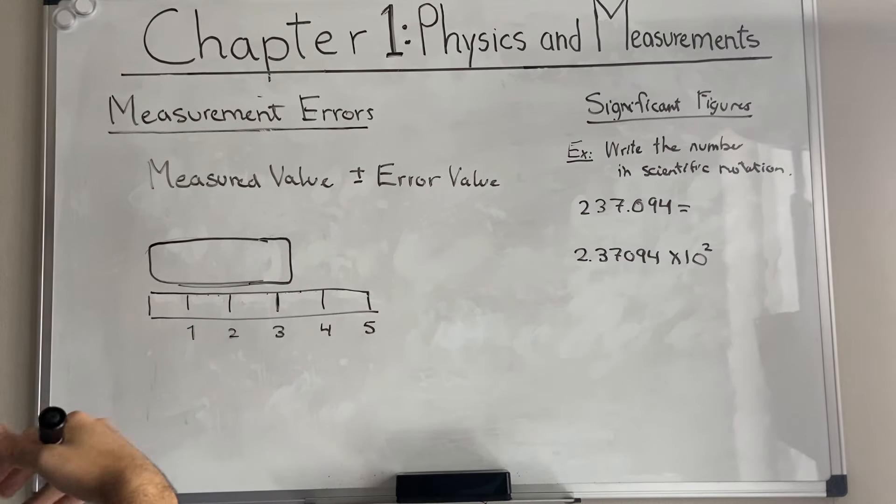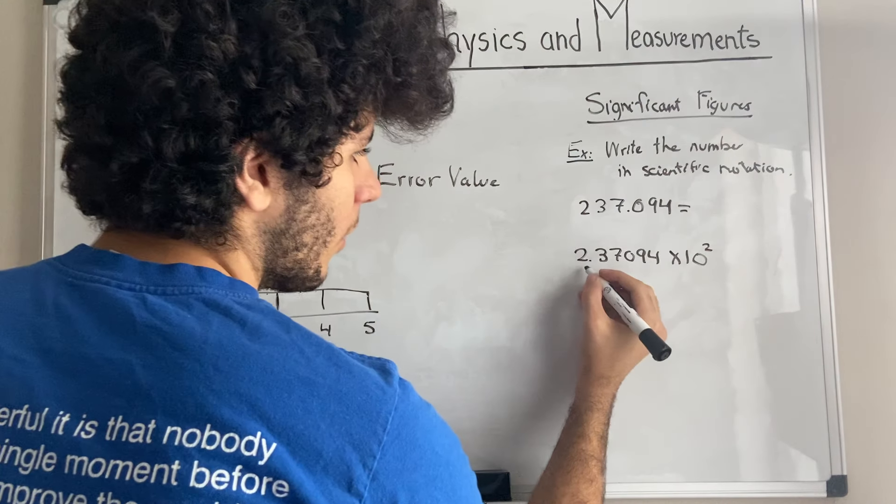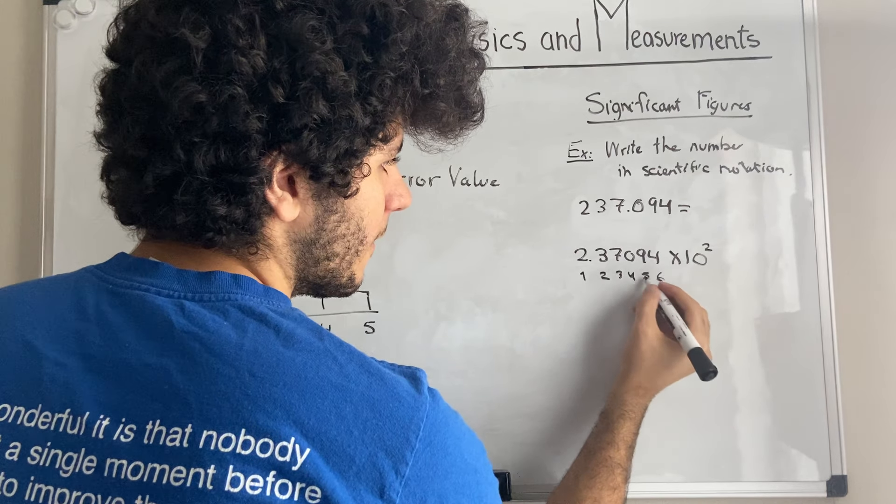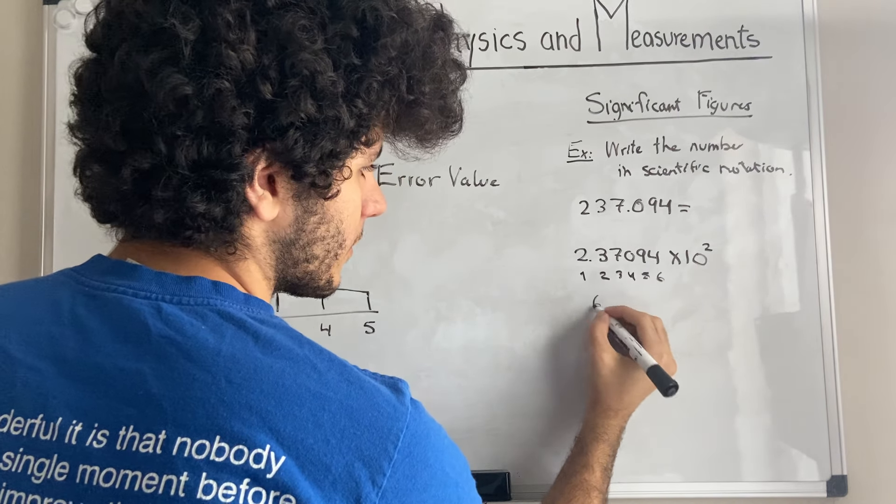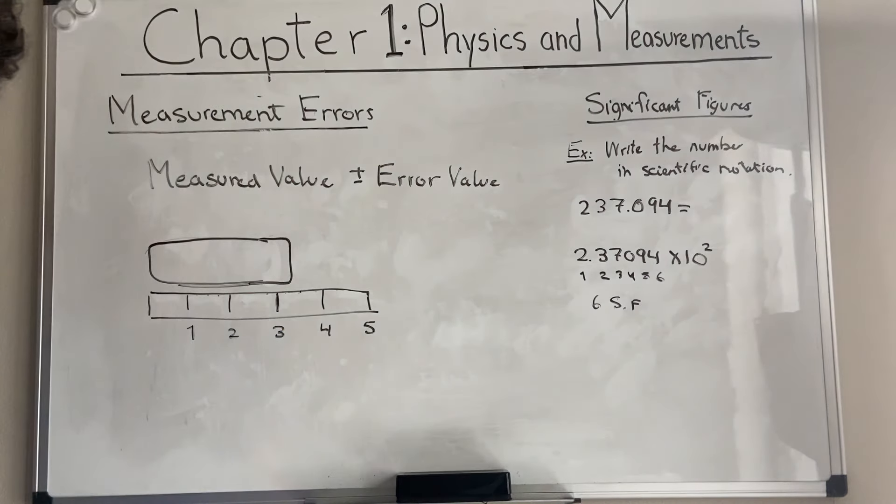Usually we use scientific notation to determine how many significant figures we have in a number. In this situation, we have 1, 2, 3, 4, 5, 6 significant figures. So 6 SF.